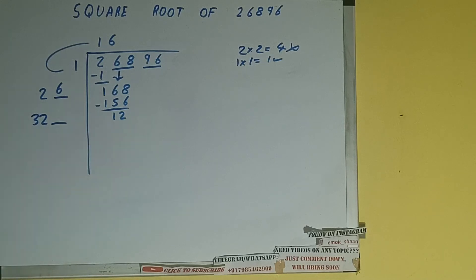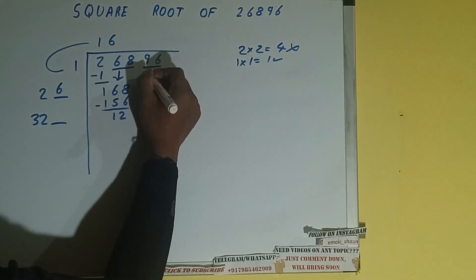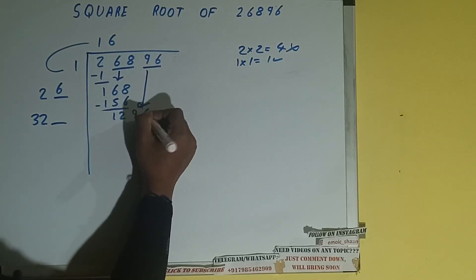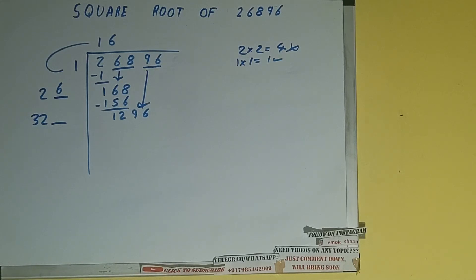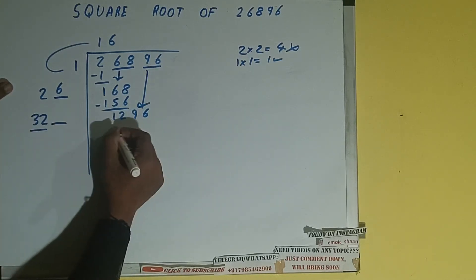Keep a digit extra and make this number big. Bring the next pair down and it will be 1296. Now compare this 32 and 129.